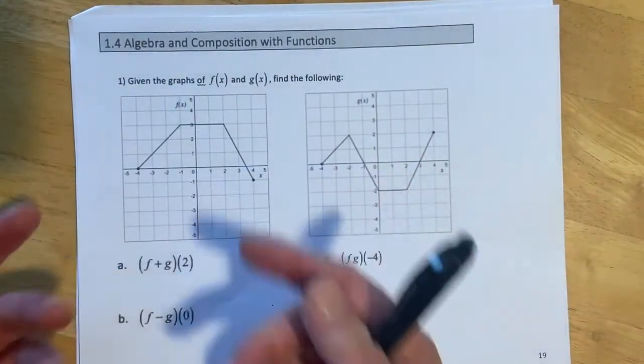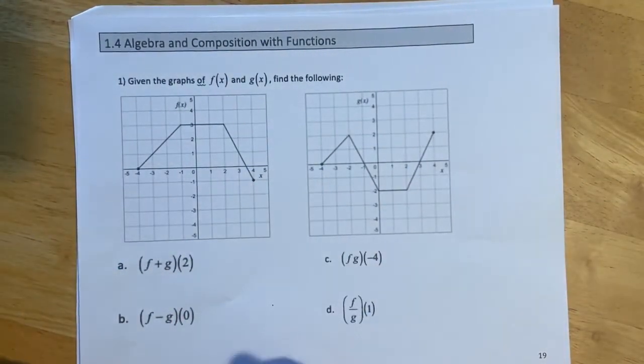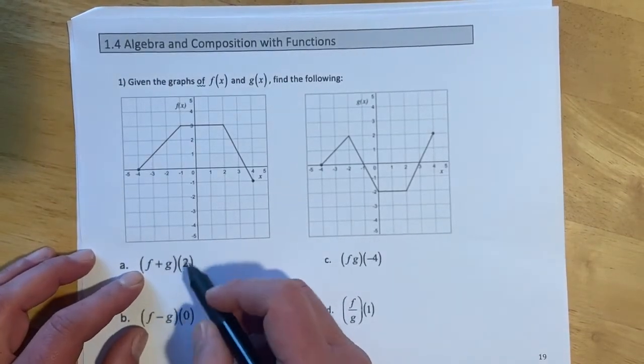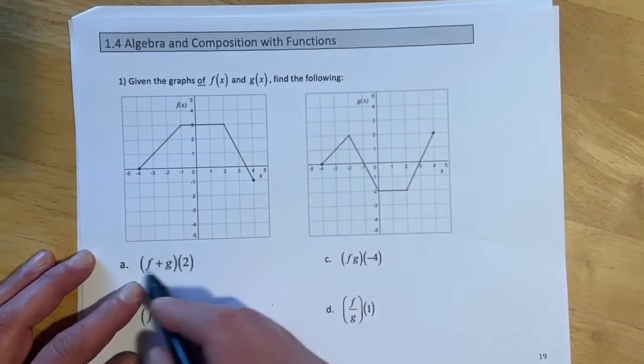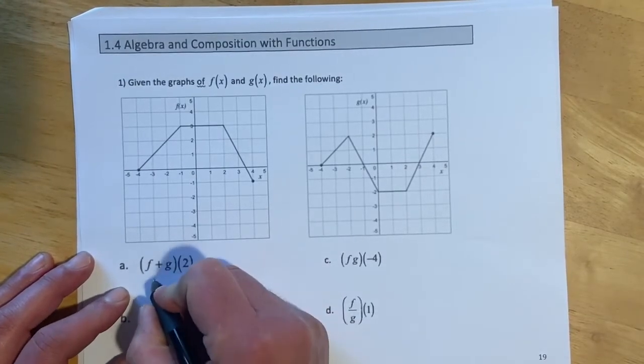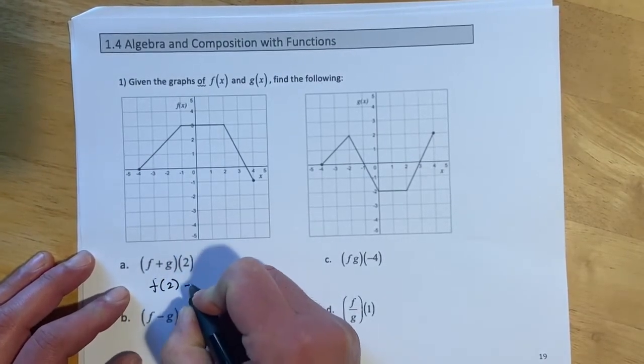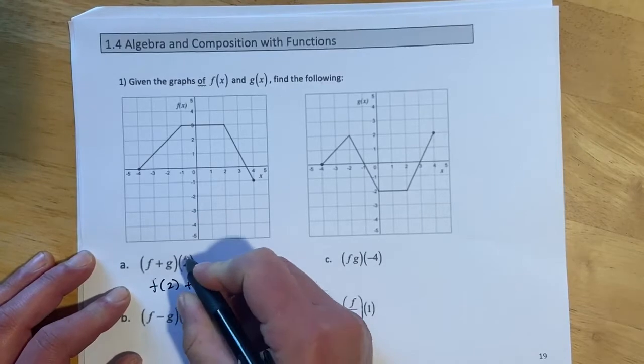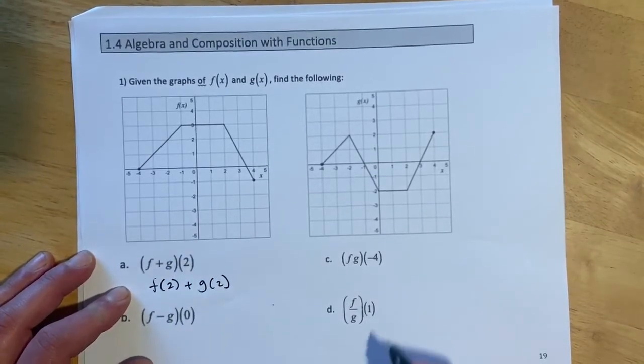The idea is we can use function notation to kind of shortcut directions. So this down here, f plus g evaluated at 2, is what this would be. This is the same thing as f of 2 plus g of 2. So those two notations mean the exact same thing.